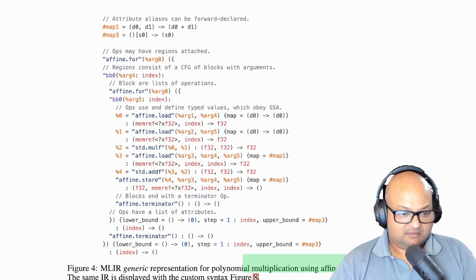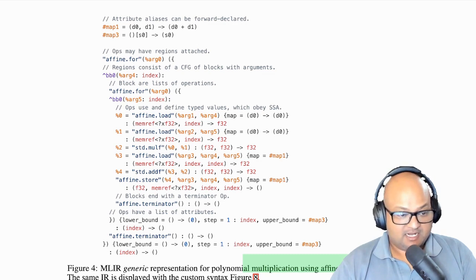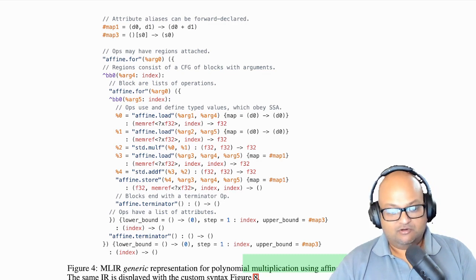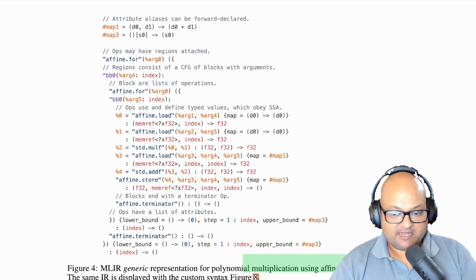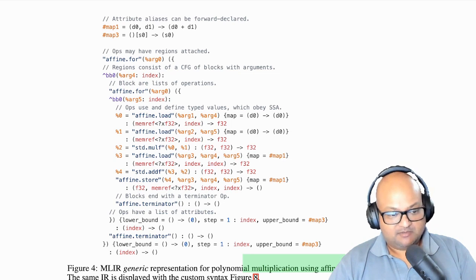And you can group together logical sets of custom ops into a namespace called a dialect. So you can define various dialects of MLIR that are custom suited to your particular language or the particular domain you're looking at. The same thing holds for types. Every value in MLIR has a type. And while there are a few basic built-in types, you can also user-define types.